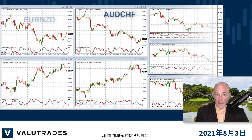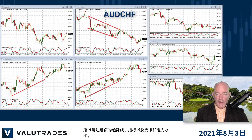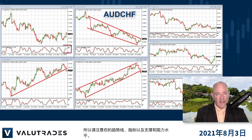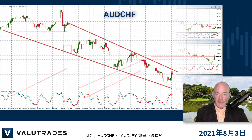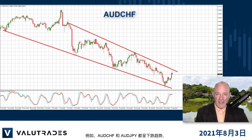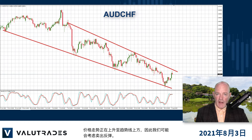We see quite a few opportunities with Aussie pairs so please watch your trendlines, indicators and levels of support and resistance. For example, both Aussie Swiss and Aussie Yen are trending down and price action is rising to the upper trendline, so we may look to sell the bounce.